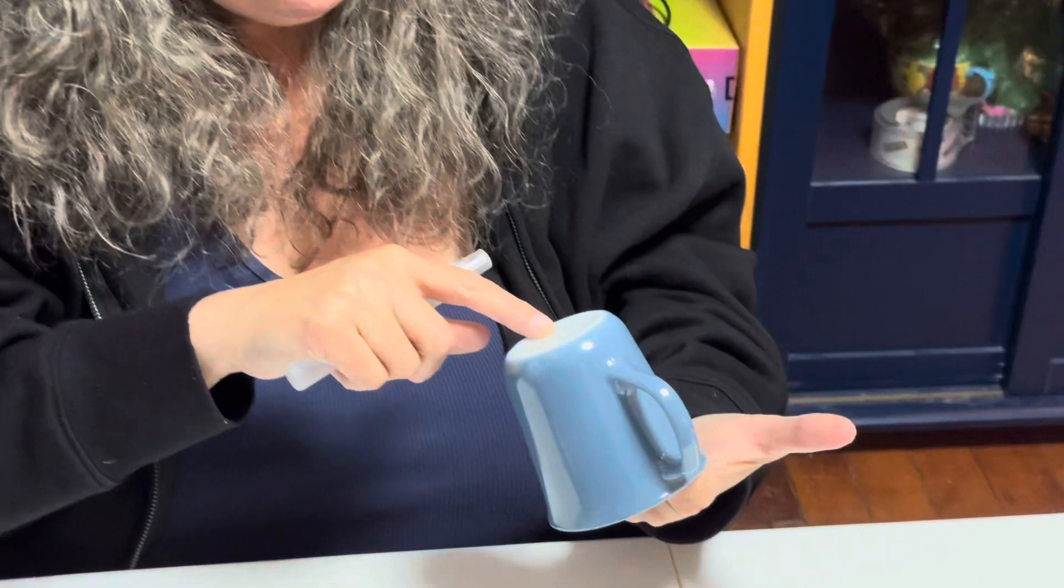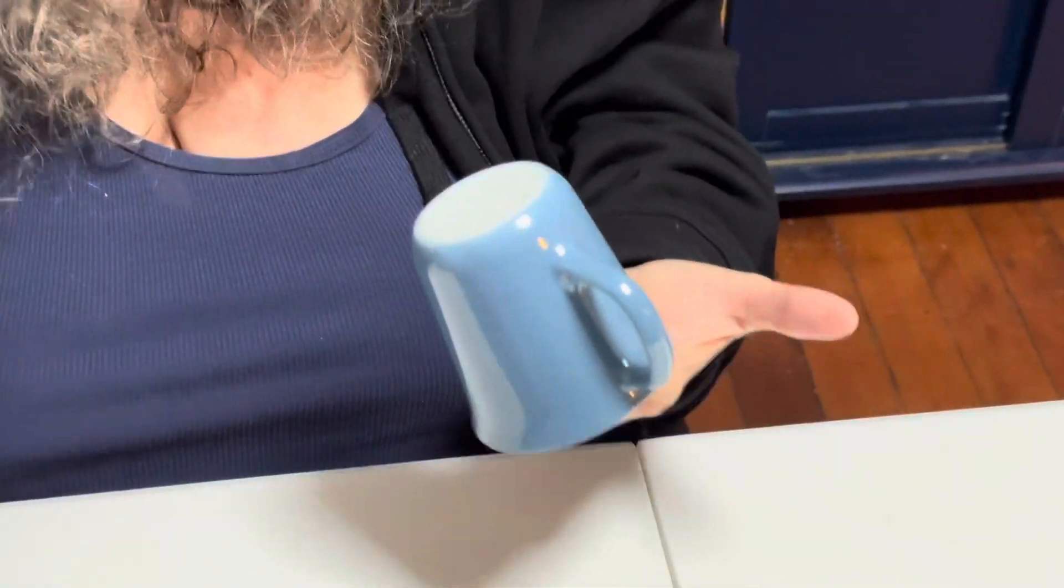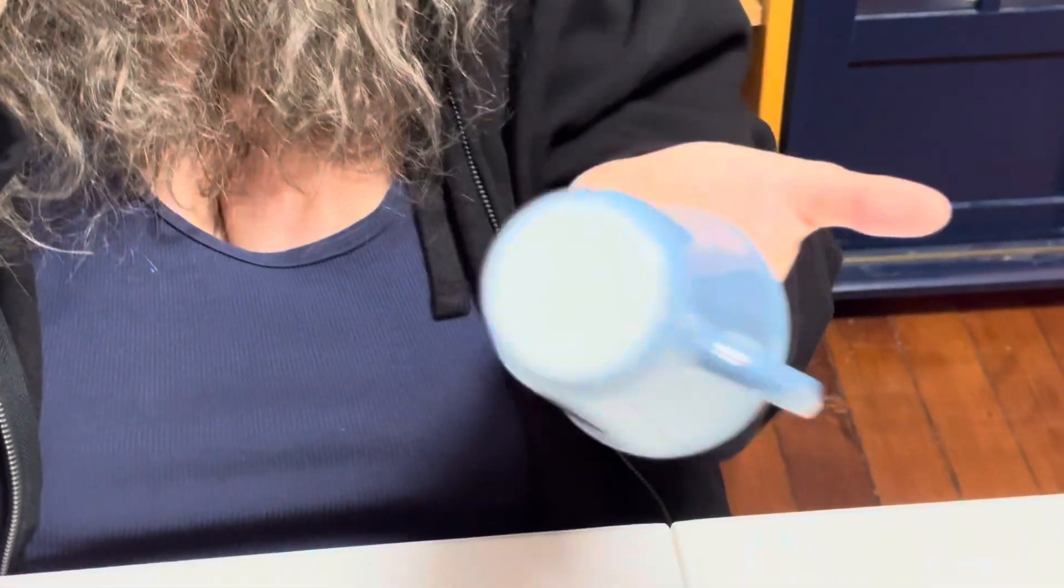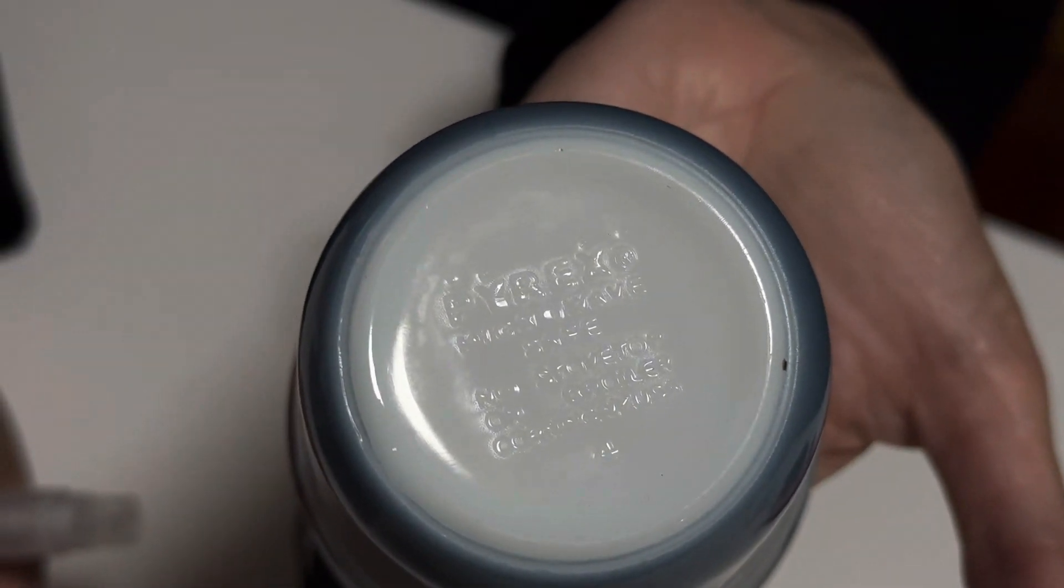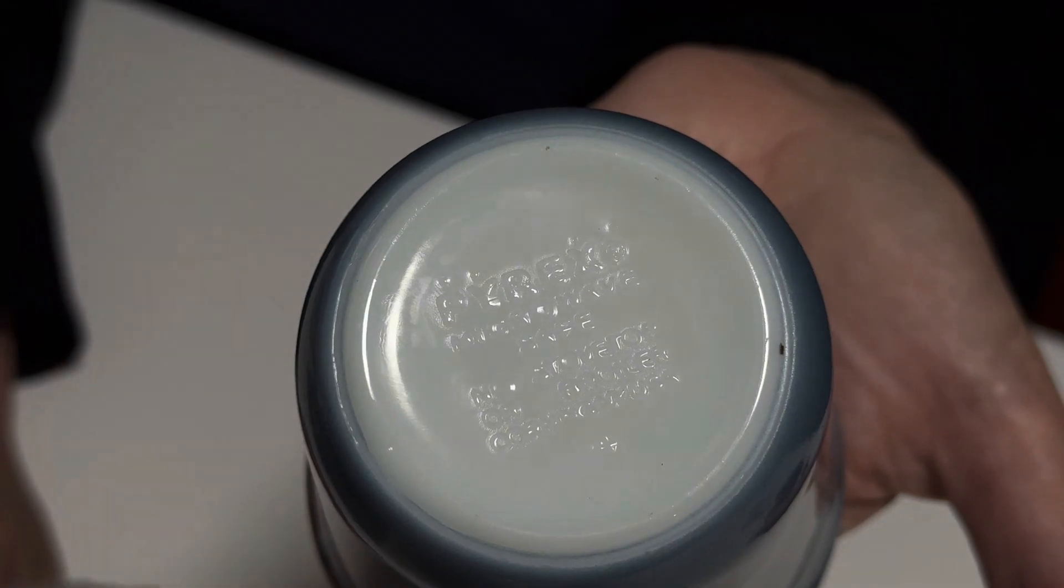Now each of these items that we're showing today are written up on the Lead Safe Mama website. This one is a vintage blue Pyrex brand. Let me just double check that. Yeah, it's Pyrex. Can you see the logo on that? So this is 71,800 parts per million lead on the exterior blue paint. It's also positive for arsenic at 697 parts per million.